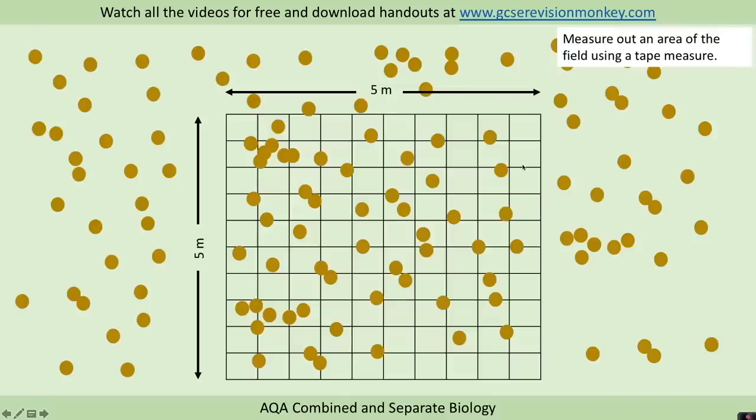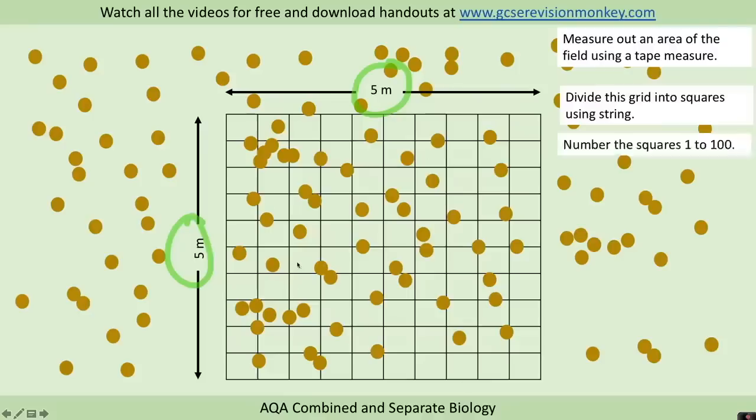We can't count the number of daisies in the whole field, so instead we measure out an area of the field using a tape measure. Here I've got a five meter by five meter area for example. We then divide this grid up into squares using string and number those squares 1 to 100.